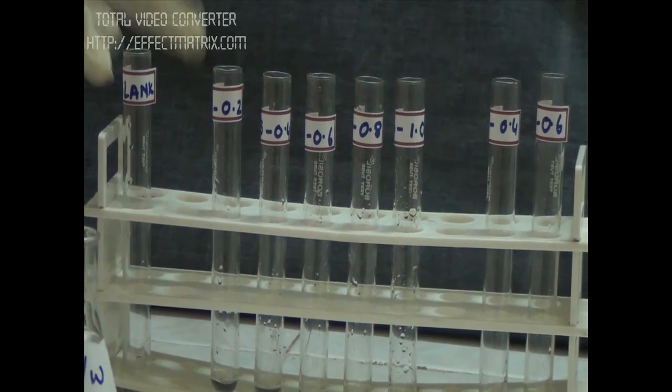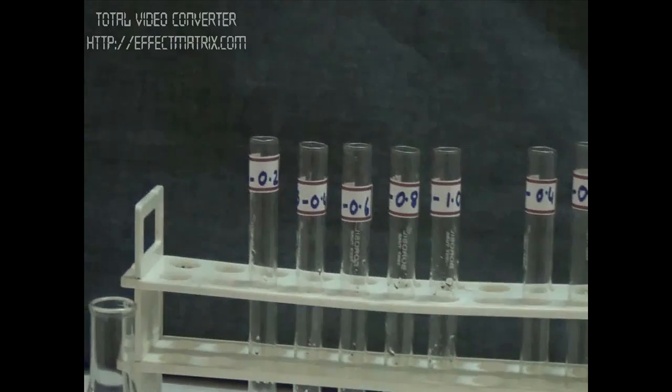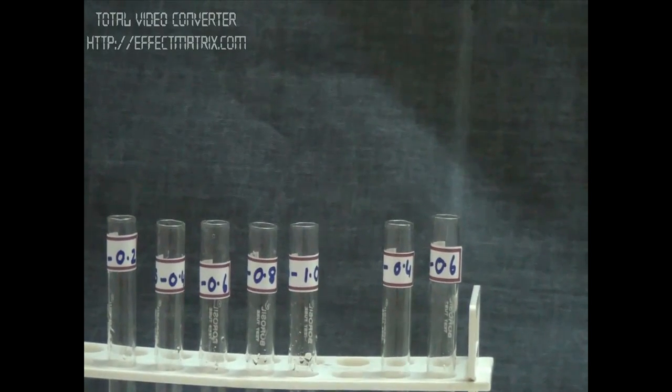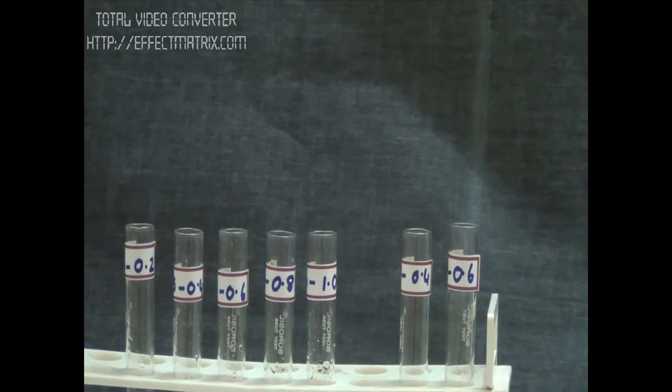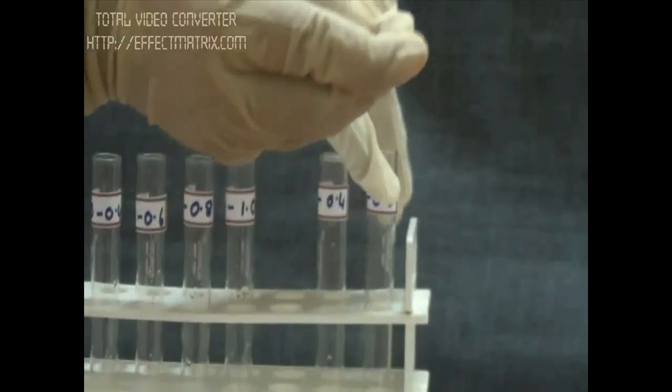But in the blank, we have to take 1 ml of distilled water. Now we add distilled water to the unknown solution to make its level also to 1 ml. We have 0.4 ml of unknown RNA solution, so I will add 0.6 ml of distilled water. Next one, we have 0.6 ml of unknown RNA, so I will add 0.4 ml of distilled water.